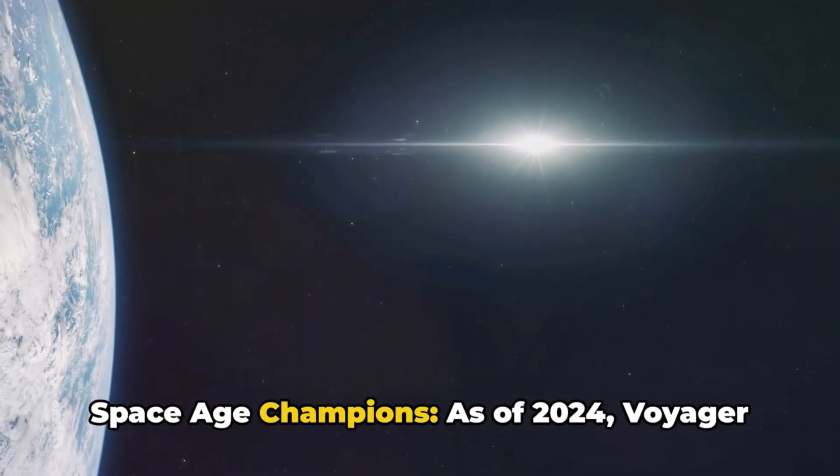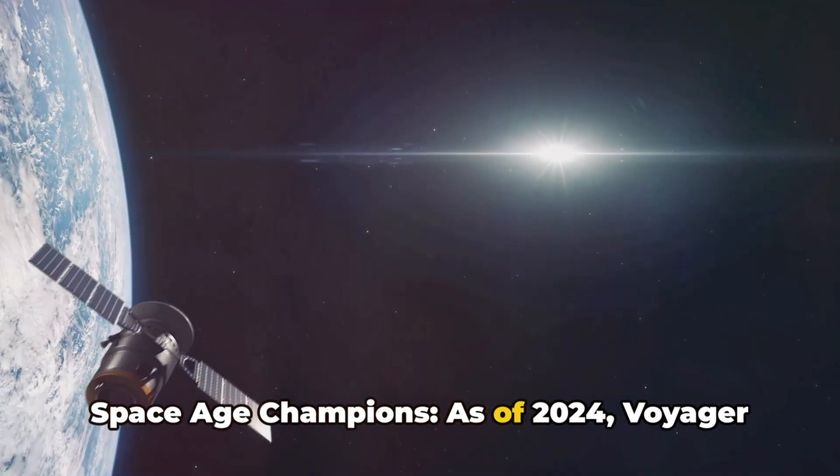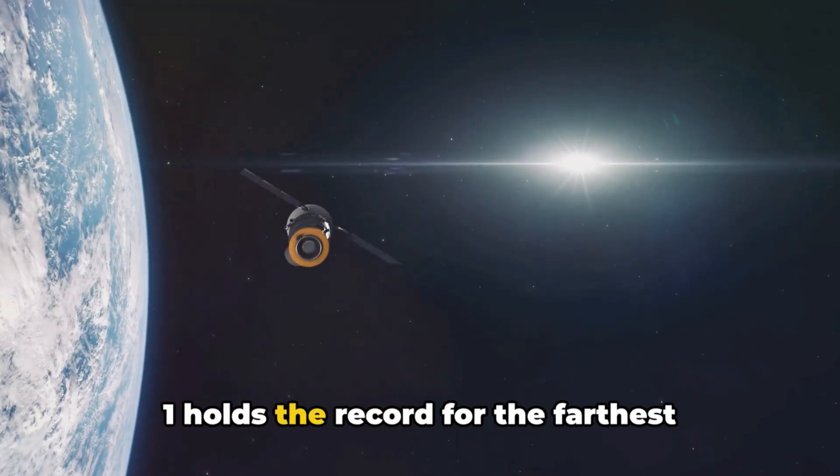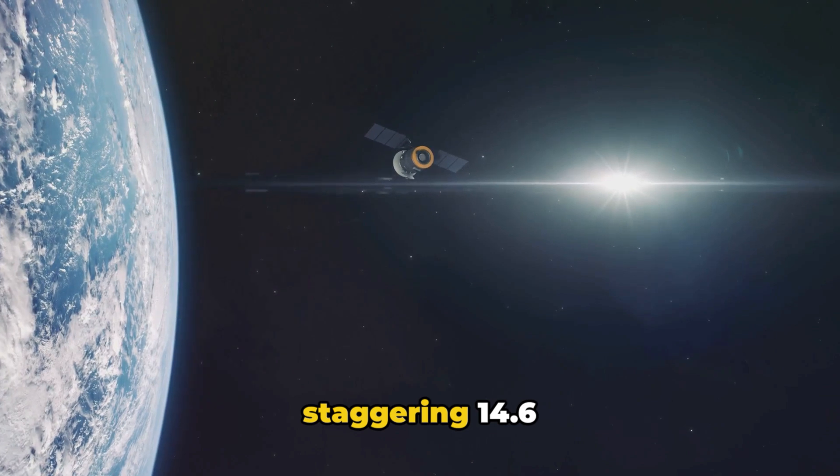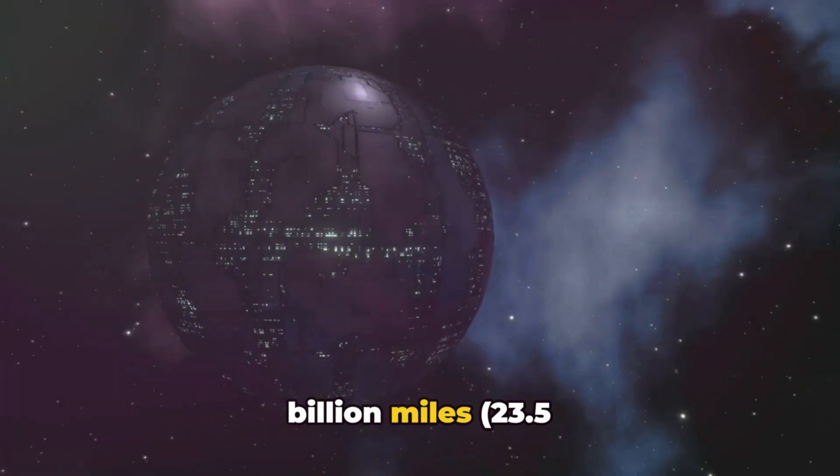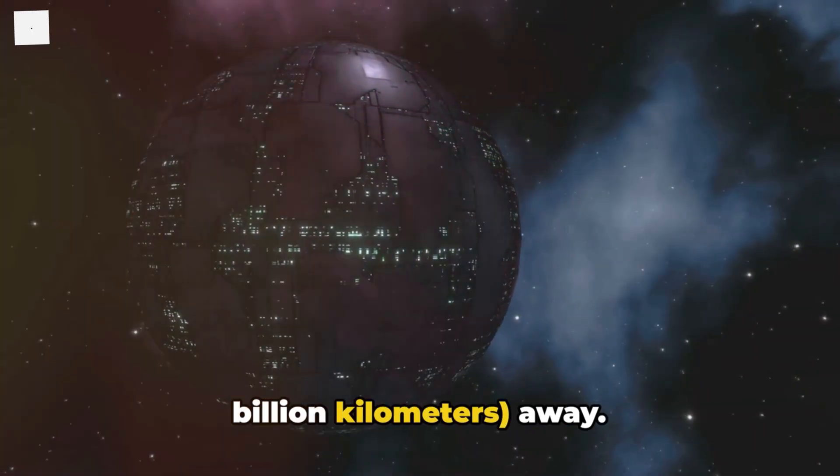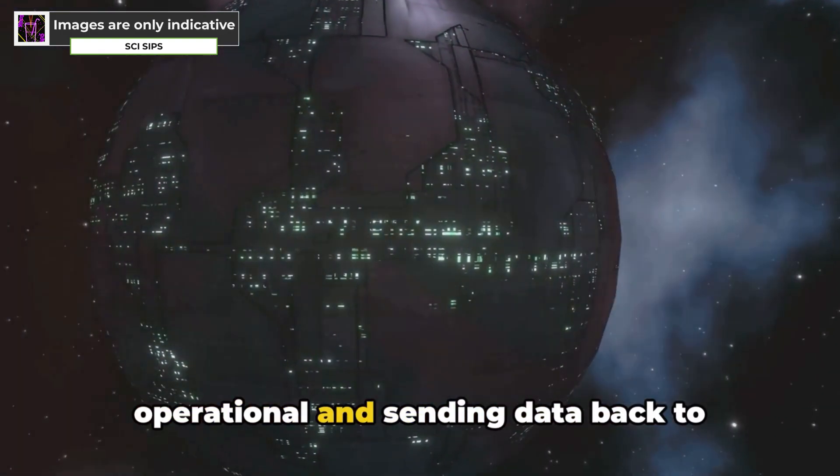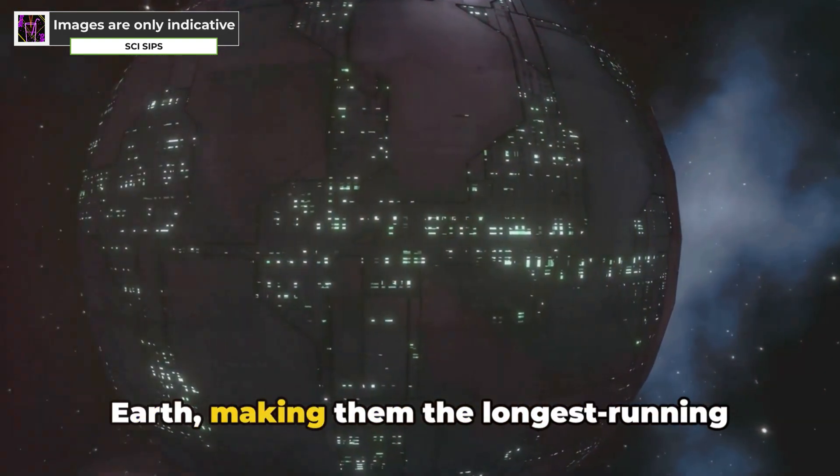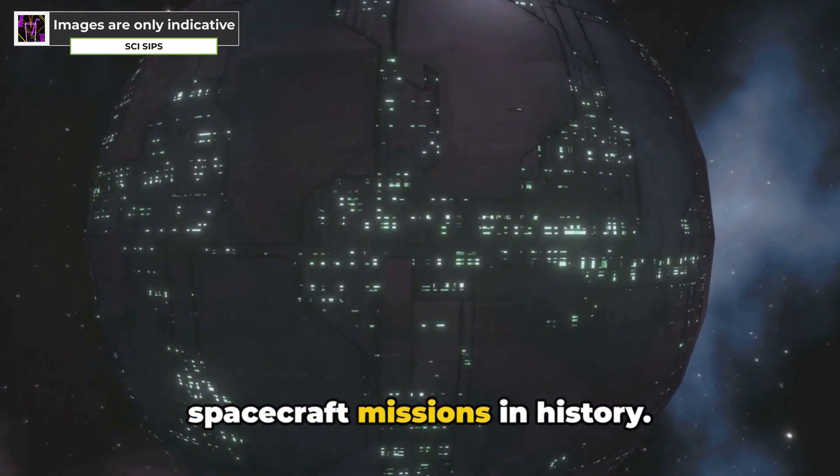Space Age Champions. As of 2024, Voyager 1 holds the record for the farthest human-made object from Earth. At a staggering 14.6 billion miles, 23.5 billion kilometers away, both Voyager 1 and 2 are still operational and sending data back to Earth, making them the longest running spacecraft missions in history.